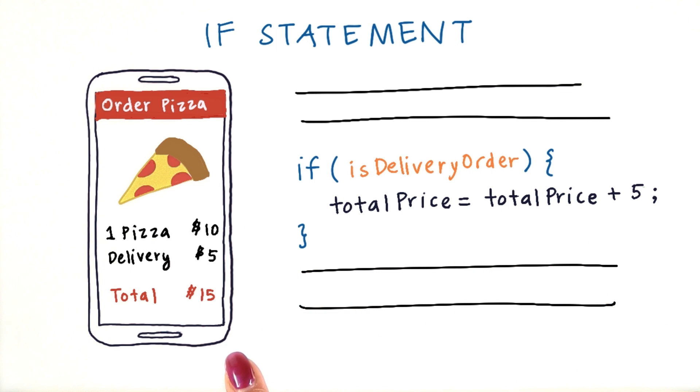In this example of a pizza ordering app, if the user wants the order to be delivered to their home, then we're going to adjust the price to add five extra dollars for the delivery charge. Otherwise, if the order is not for delivery, then we just skip this line of code, and we don't add the extra charge for delivery. Then in these subsequent lines of code, we can use the total price variable with the correct value.